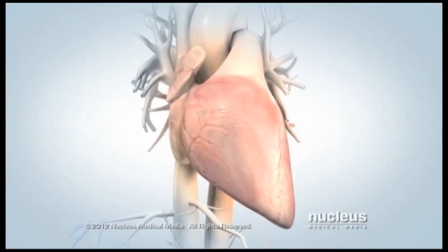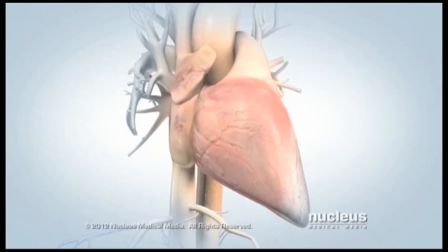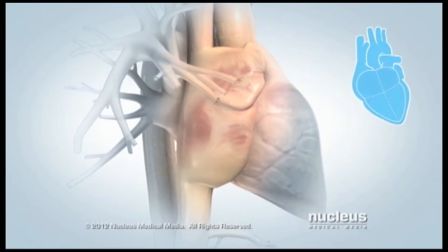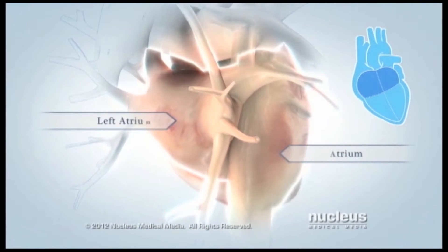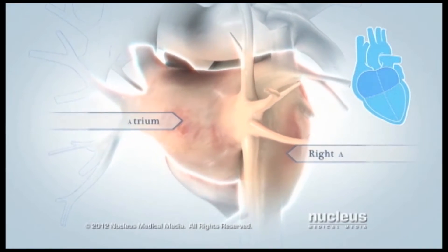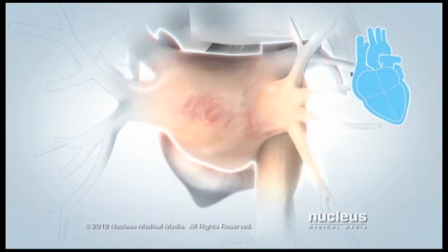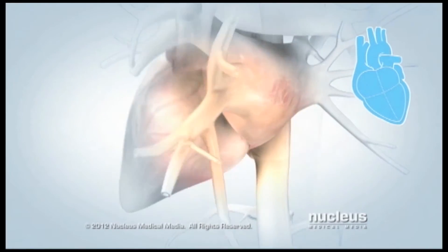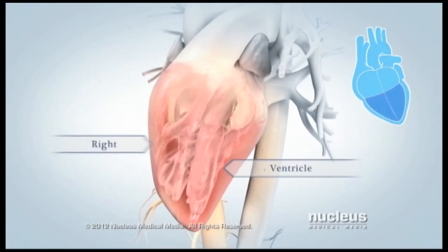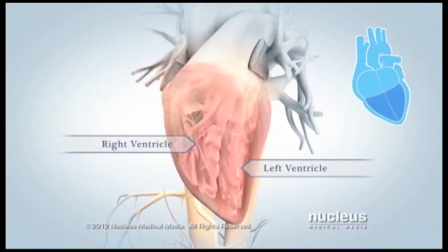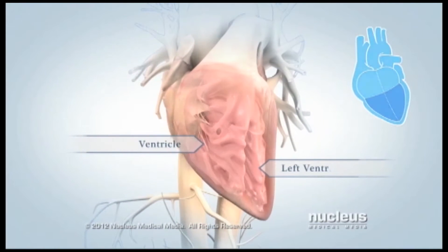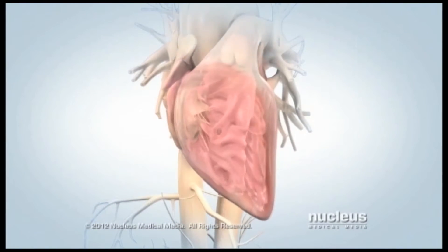Your heart has four chambers. Two upper chambers, called the left and right atria, and two lower chambers, called the left and right ventricles, contract in a steady rhythm known as your heartbeat.